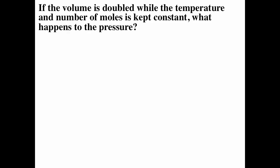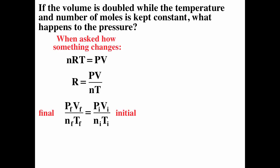If the volume is doubled while the temperature and number of moles is kept constant, what happens to the pressure? One approach is to start with the ideal gas law: PV = NRT, which can be rearranged to NRT = PV. If we divide both sides by NT, we get R = PV over NT.